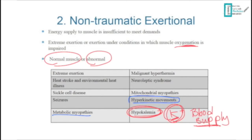Metabolic myopathies represent a small percentage of rhabdomyolysis cases. You should suspect metabolic myopathy in patients with recurrent episodes — for example, a 16-year-old who develops rhabdomyolysis after a marathon and then again after exertion at school. Such patients require specific investigations based on genetic workup.